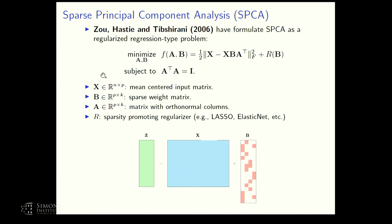Sparse PCA is a widely studied problem. I'll start with the formulation by Zou, Hastie, and Tibshirani, who formulate sparse PCA as a regularized regression-type problem. We want to find a sparse weight matrix B with few active coefficients, so that the new principal components are a weighted linear combination of only some of the original variables. We achieve this by augmenting the objective with a penalty that promotes sparsity on B.